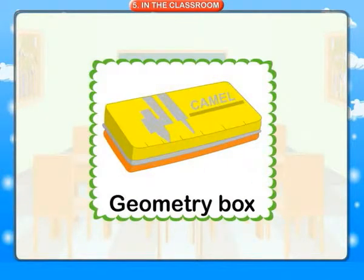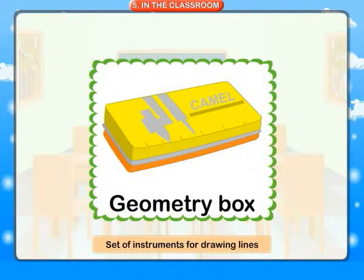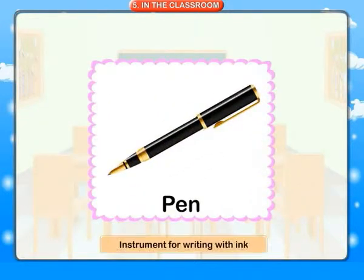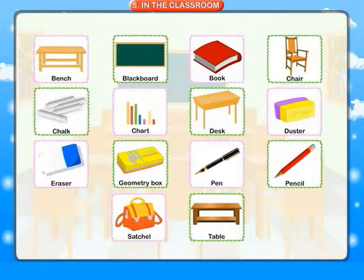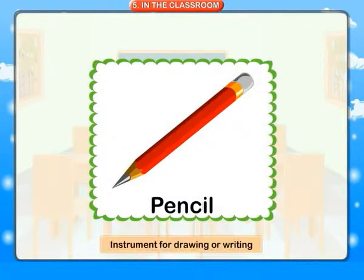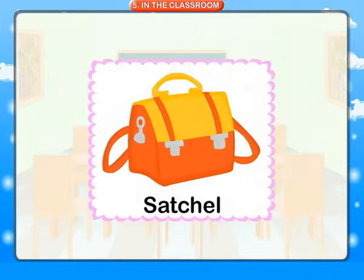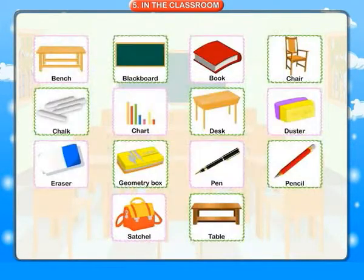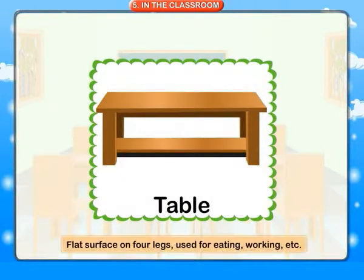Geometry box: a set of instruments for drawing lines. Pen: an instrument for writing with ink. Pencil: an instrument for drawing or writing. Satchel: a small bag for carrying school books. Table: a flat surface on four legs used for eating, working, etc.